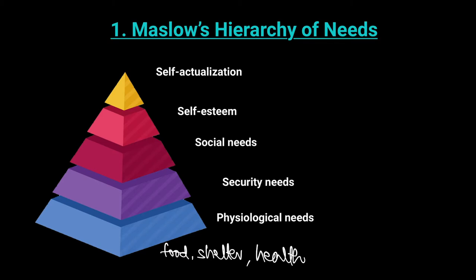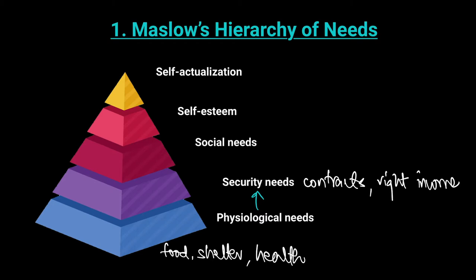Once physiological needs are achieved, people level up and move on to security needs. They want to be sure they won't lose their jobs overnight — that next day you show up and someone says you've been replaced shouldn't happen. This security comes in the form of employment contracts the business provides, along with the right income to ensure you can survive and look after your family. You want to feel secure in your current situation.